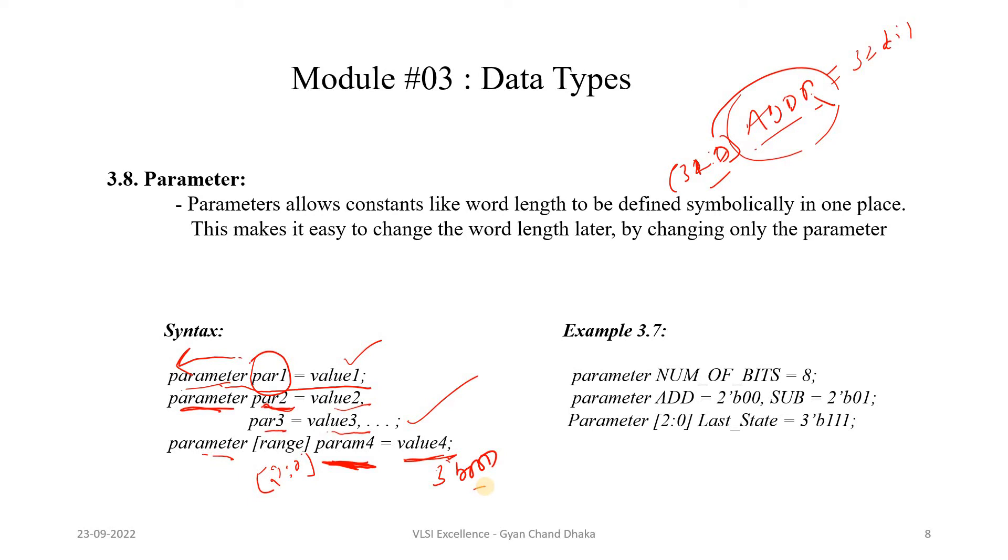For example, here you see the number of bits is nothing but 8 here. Now we are declaring multiple parameters. Here the parameter ADD which has a value 2'b00, then we have SUBTRACT which has a value 2'b01, and then we have a semicolon here. This line will show that there are two parameters which are ADD and SUBTRACT.